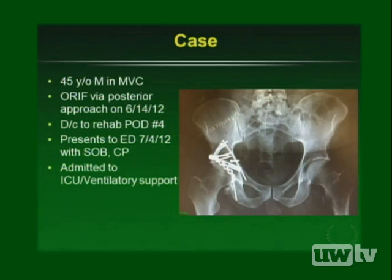Case example: a 45-year-old male involved in a motor vehicle crash who underwent a posterior approach and was discharged on postoperative day four, returning two weeks later with shortness of breath and chest pain. He was admitted to the ICU requiring ventilatory support. ECG showed right heart strain with inverted T waves in the anterior leads, and a CT angiogram confirmed massive pulmonary embolism — the very scenario we aim to prevent.